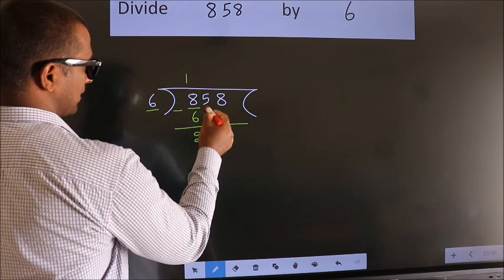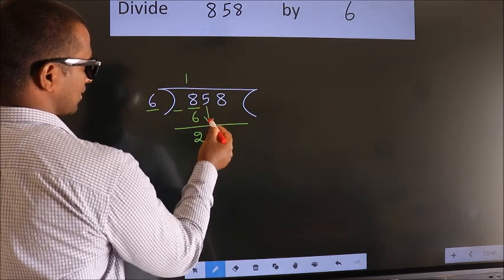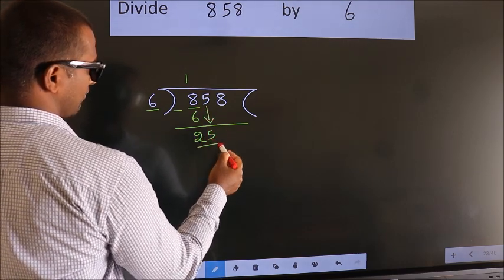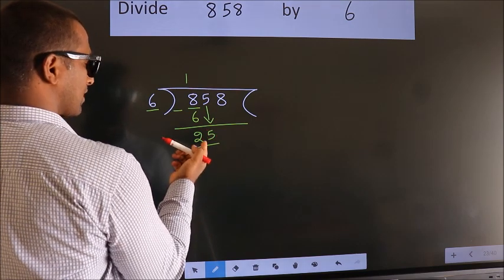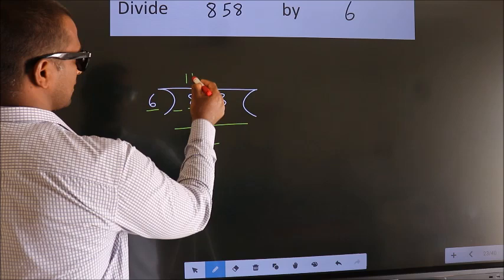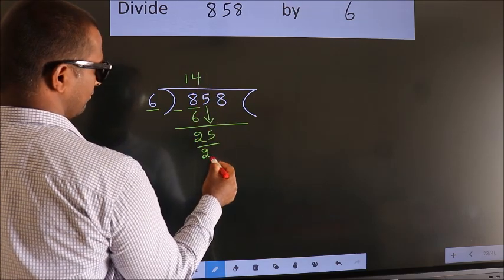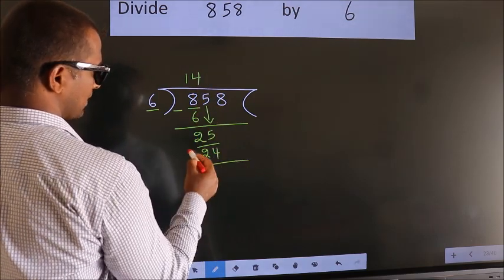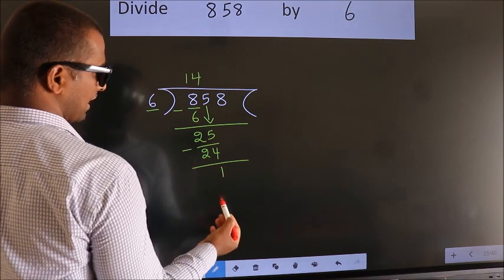After this, bring down the beside number. So, 5 down. 25. A number close to 25 in 6 table is 6 fours 24. Now we subtract. We get 1.